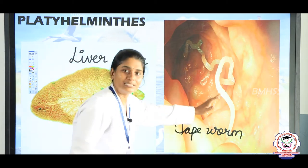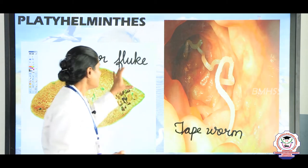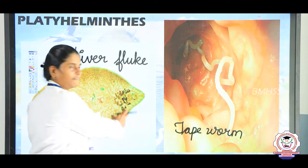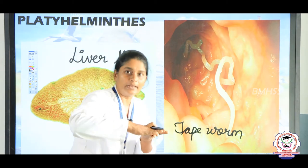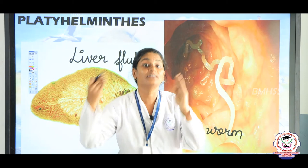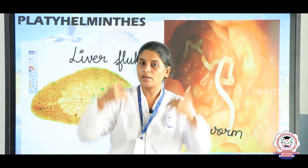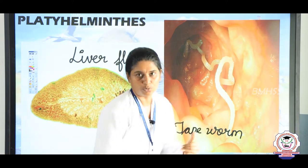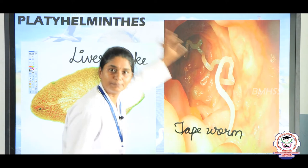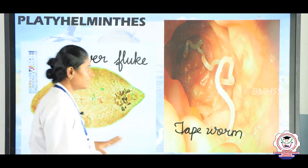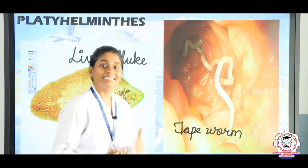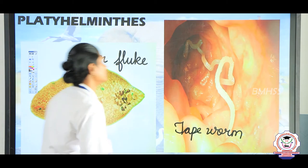These animals are unsegmented — they do not have segments and they look very flat, either ribbon-shaped or leaf-like. These worms are mostly parasites, meaning animals that live inside the body of another animal. Tapeworm can be seen inside the intestine of animals, and liver fluke is also found inside the intestine of cattle.